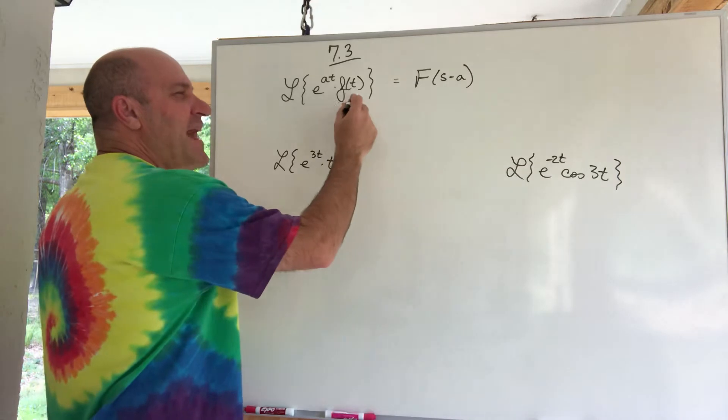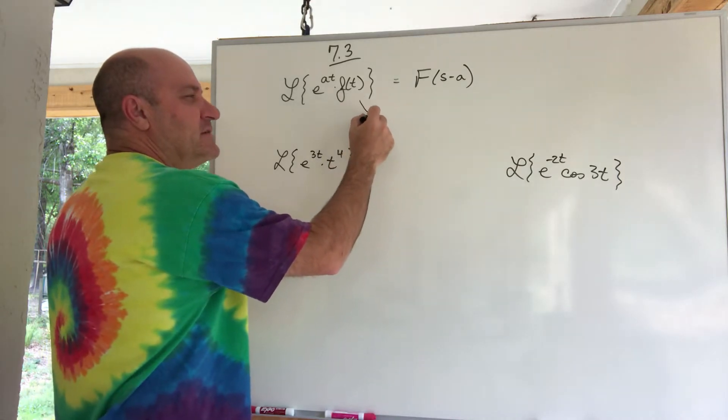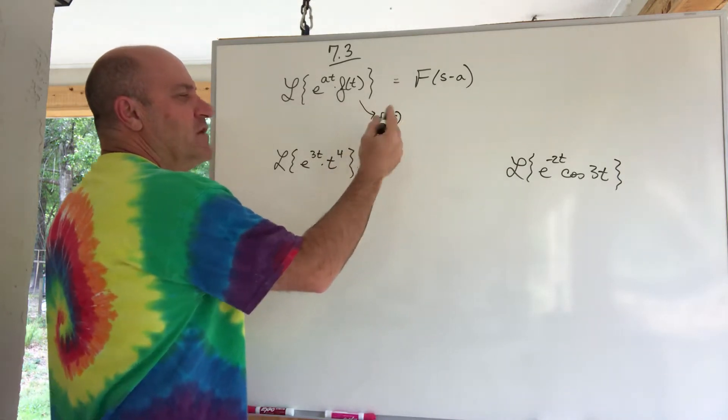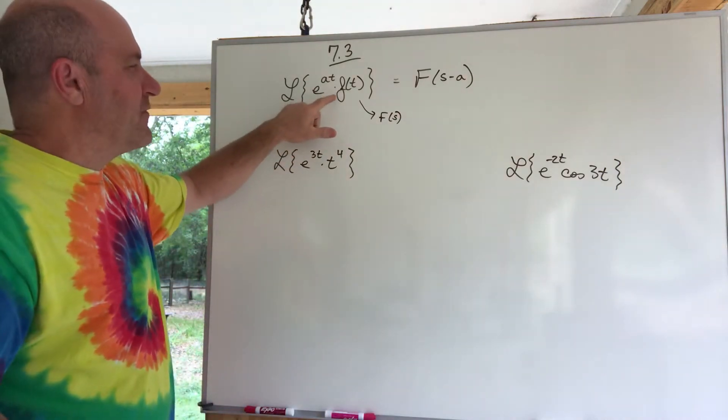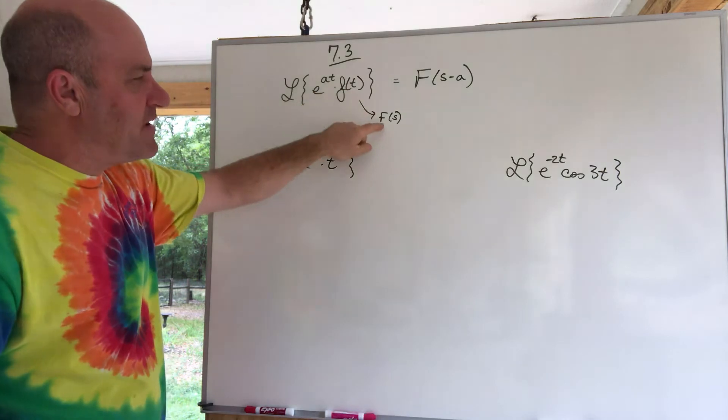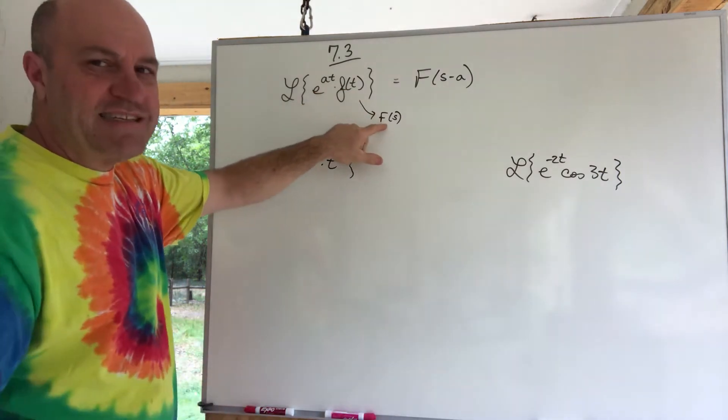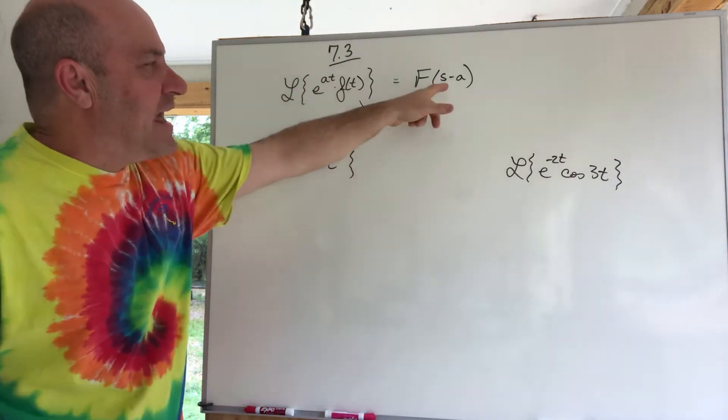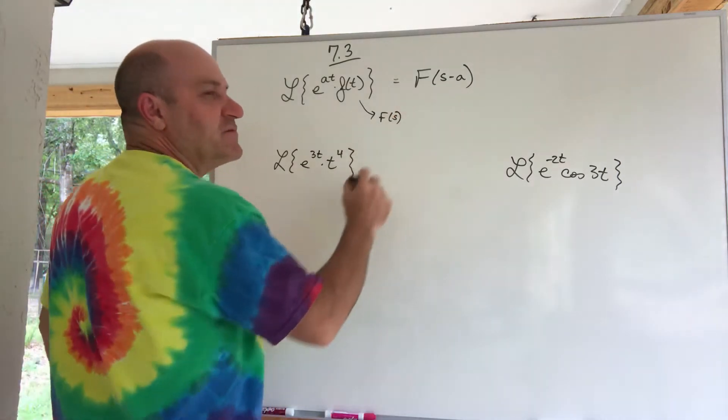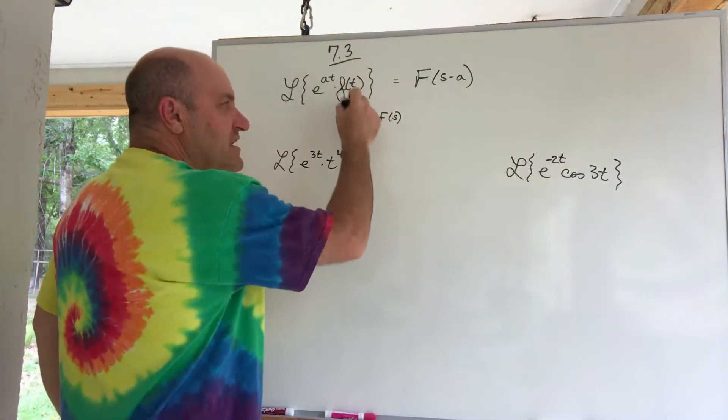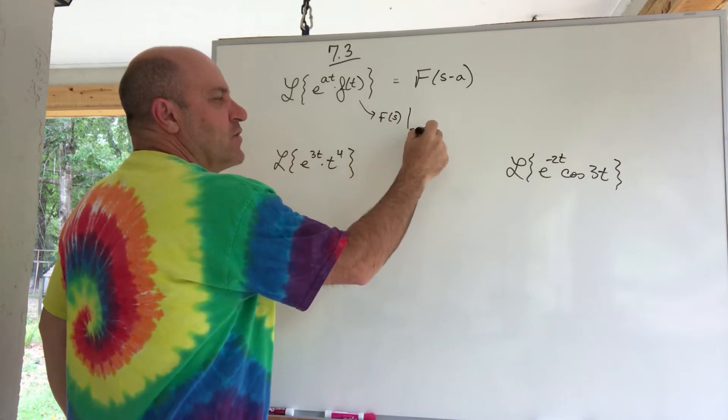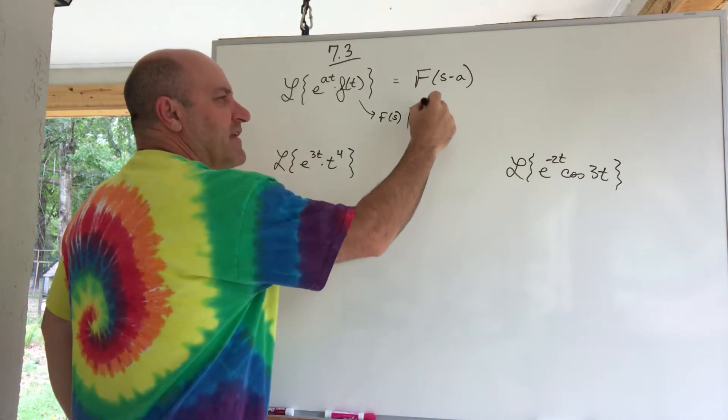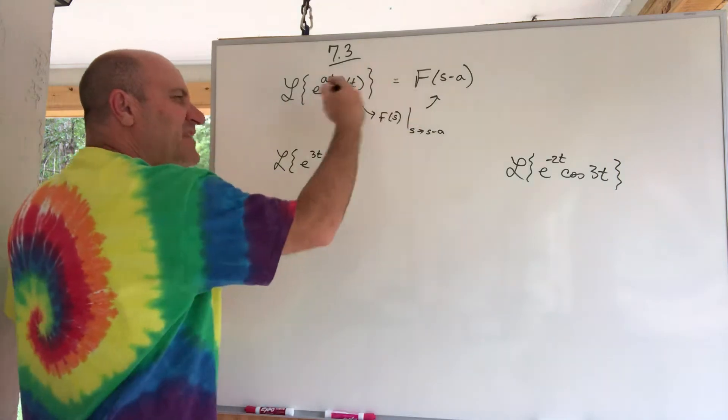The Laplace of f of t is big F of s. So what they're saying here is if you've got an e function multiplied by your function, then what you do is you do its Laplace, big F of s, but you replace the s with an s minus a. So sometimes we denote that like this: I do its Laplace, which is big F of s, but I replace the s with an s minus a, and then that gives me this. So that's what that rule says.